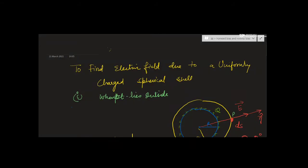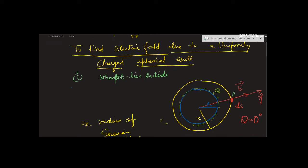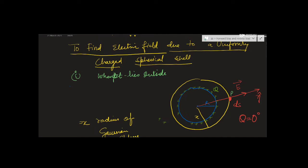This is the fourth application of Gauss Law to find the electric field due to a uniformly charged spherical shell or sphere. The first case is when the point is lying outside the shell or sphere.